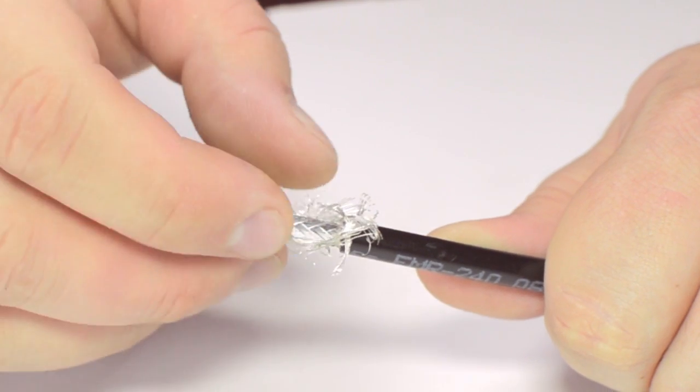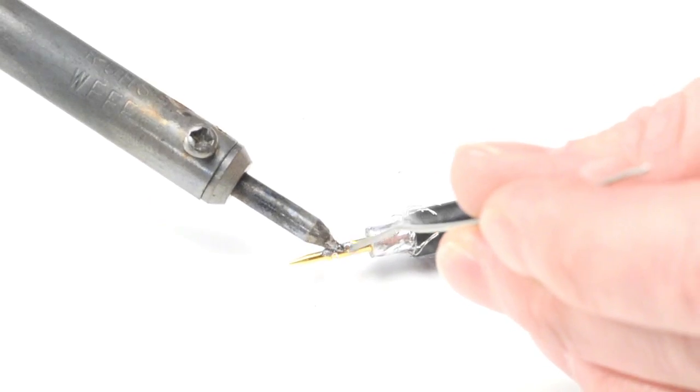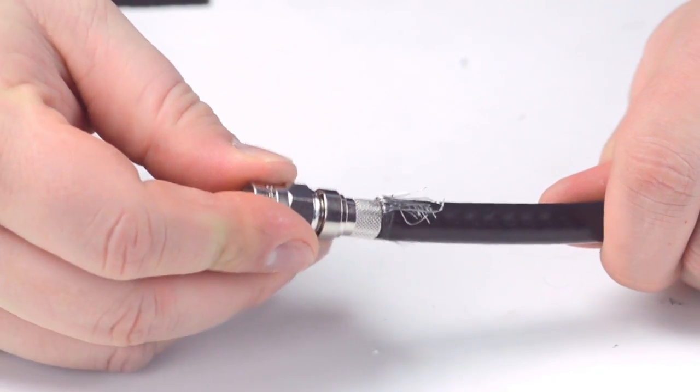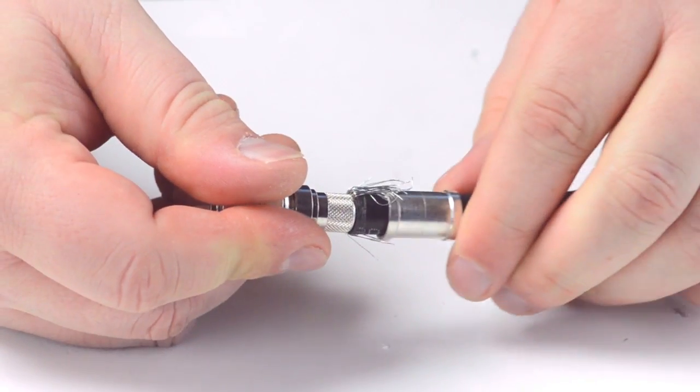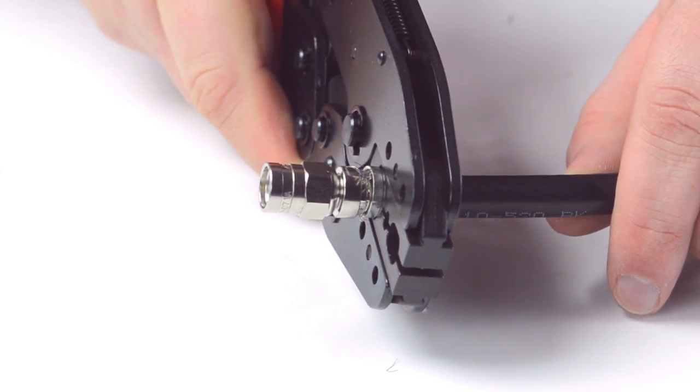Pull back the braided shield and insert the pin onto the center conductor. Solder the pin onto the center conductor and insert the connector housing over the cable. Then slide up the ferrule to the base of the connector, folding the shield with it. Crimp the ferrule under the outer jacket to complete termination.